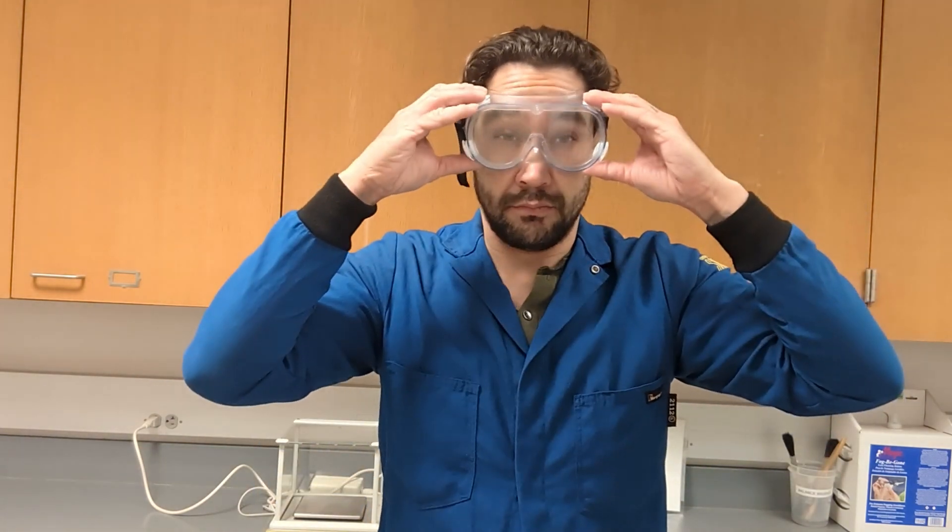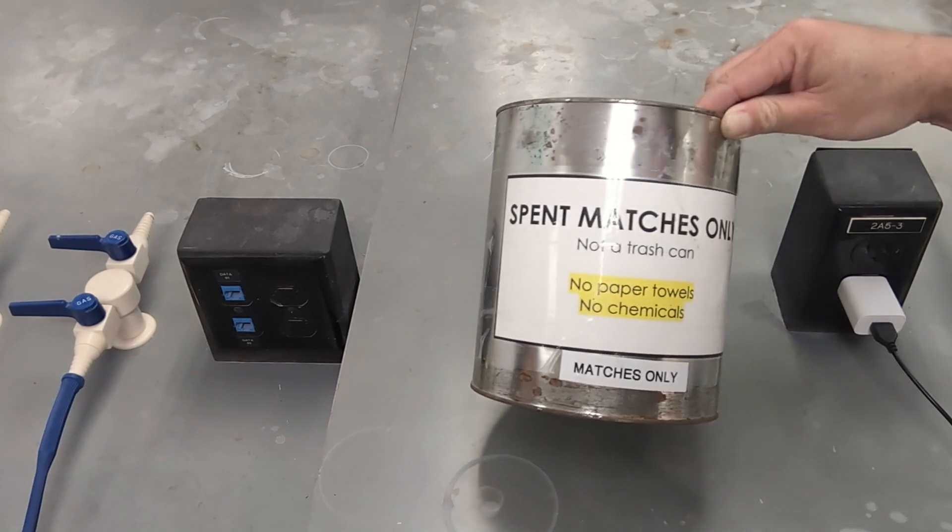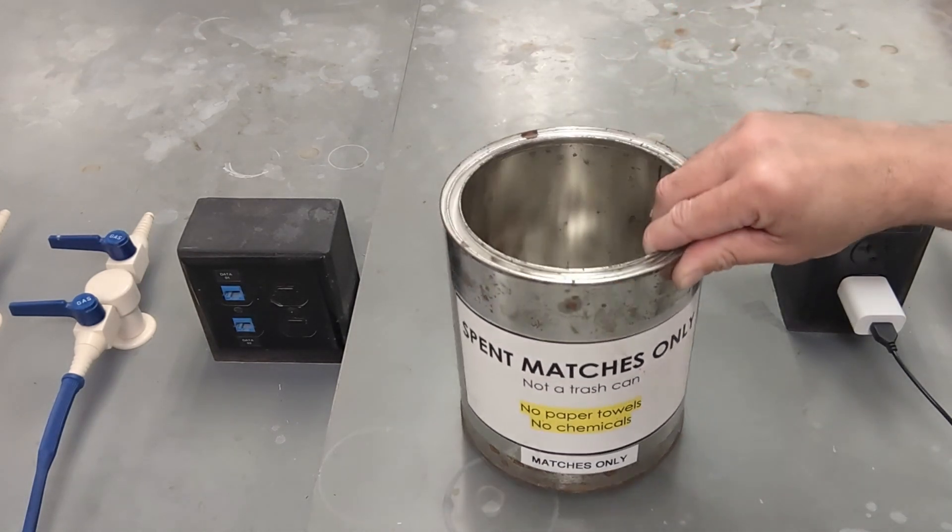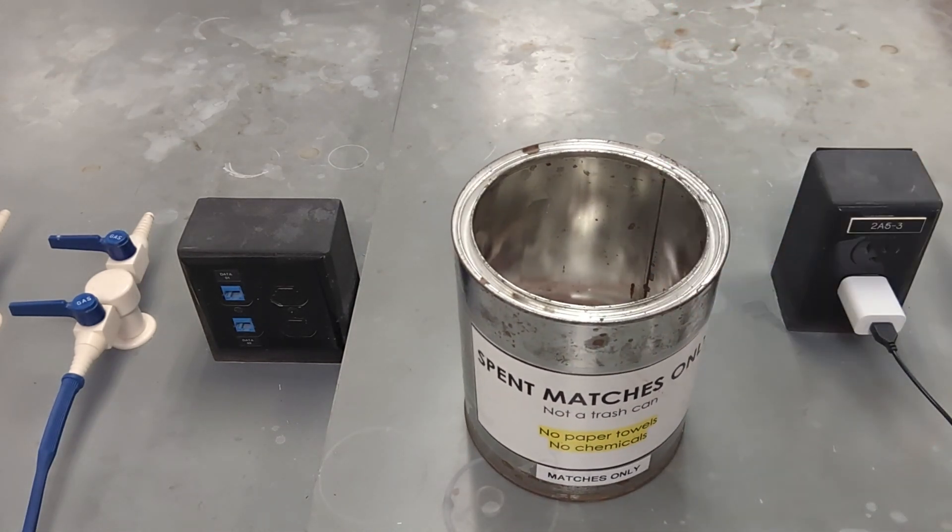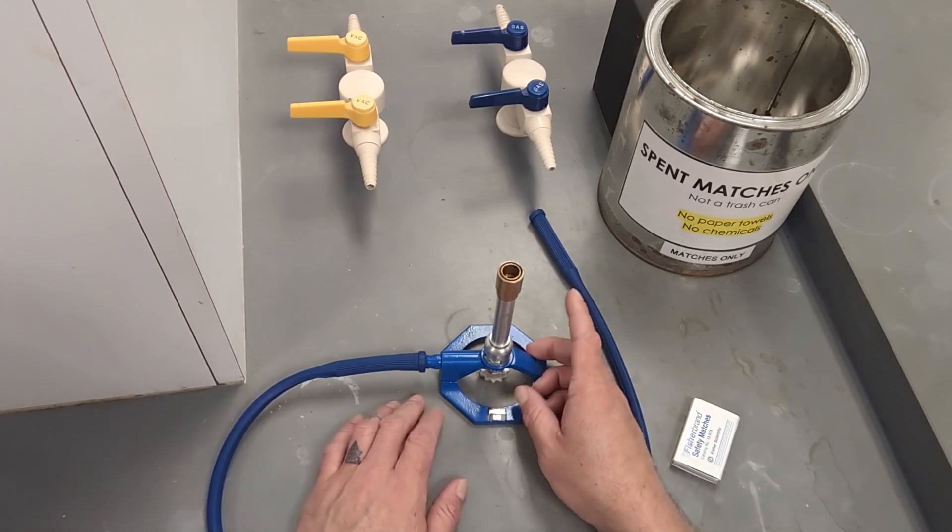And that you also have your lab goggles. If you are a person with long hair be sure to tie it back as well. And one more thing that you'll need is a designated container for your spent matches. In this case it is an aluminum coffee can.